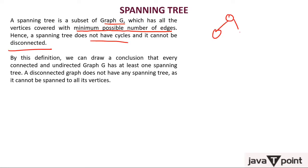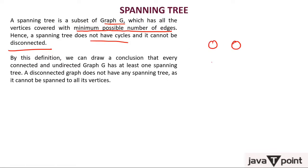A tree cannot be disconnected either. By this definition we can conclude that every connected undirected graph G has at least one spanning tree. If a graph is connected and undirected, we can say 100% that it has at least one spanning tree.